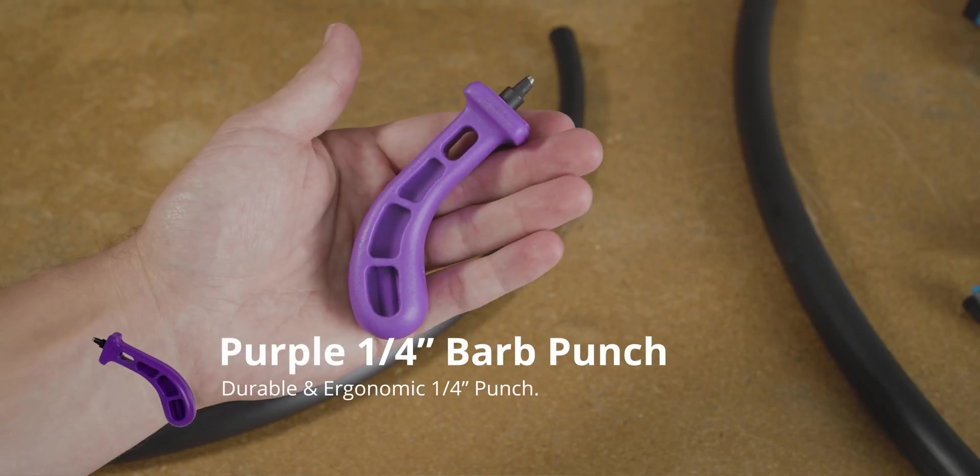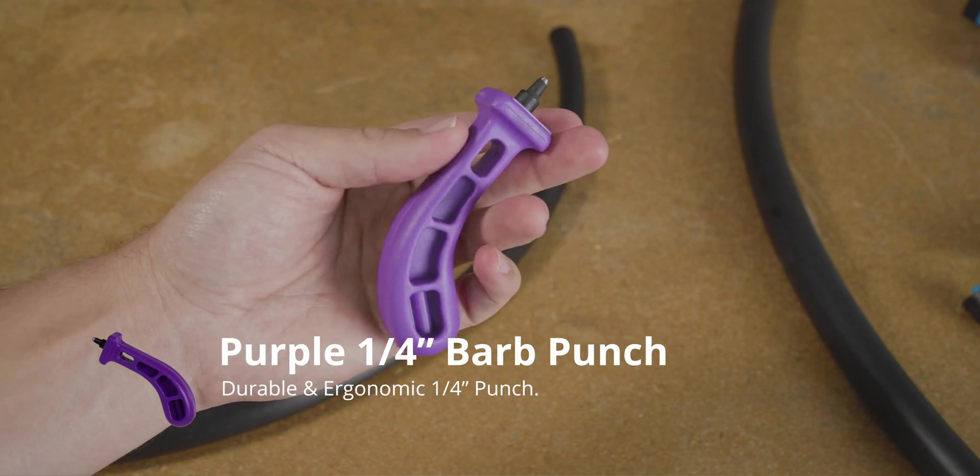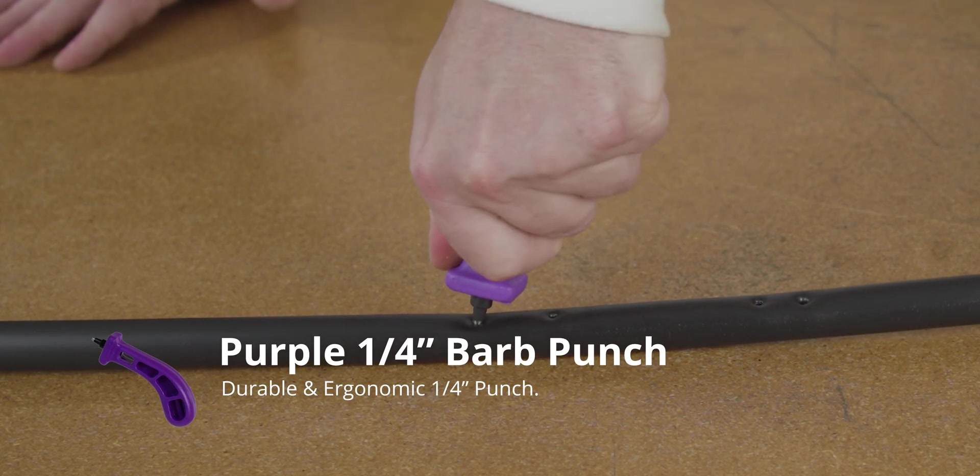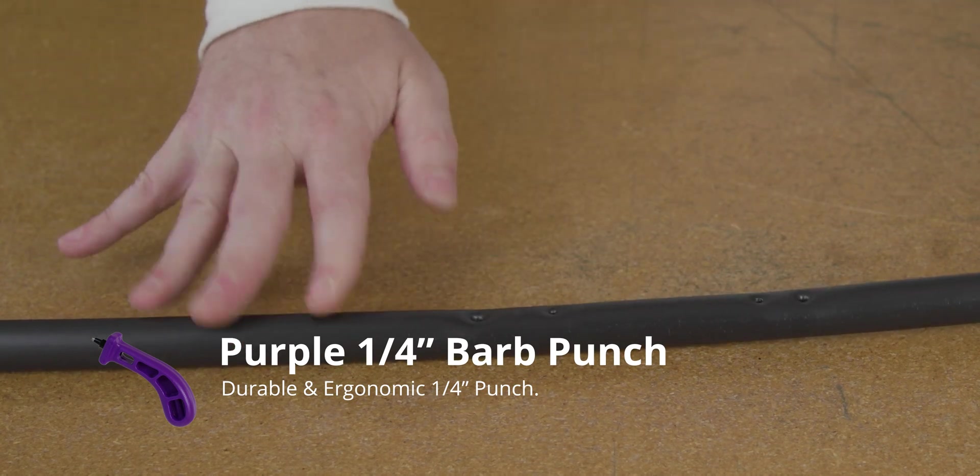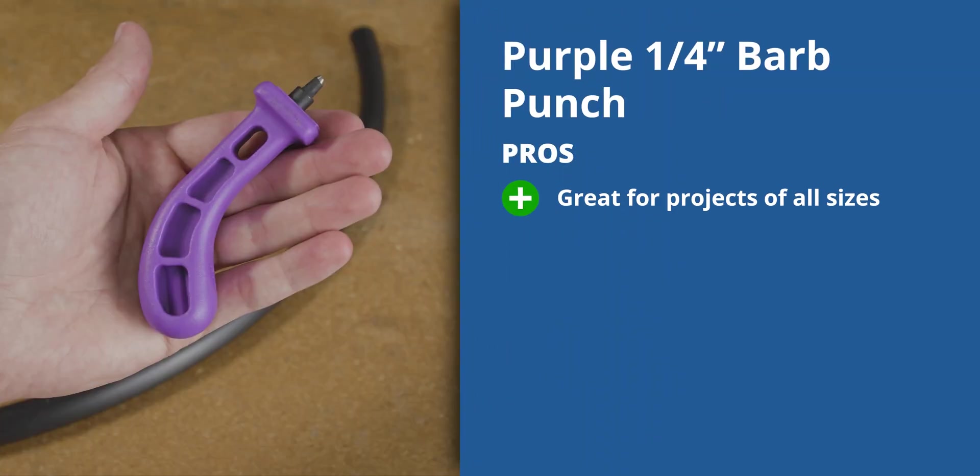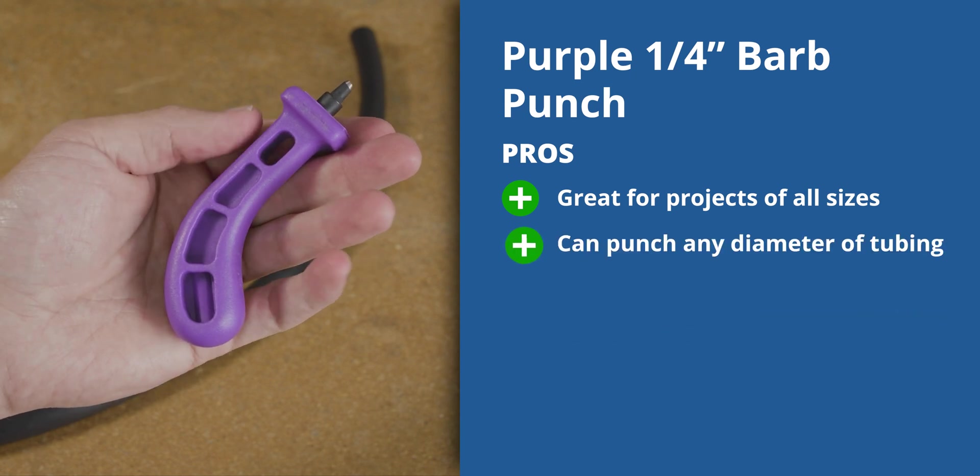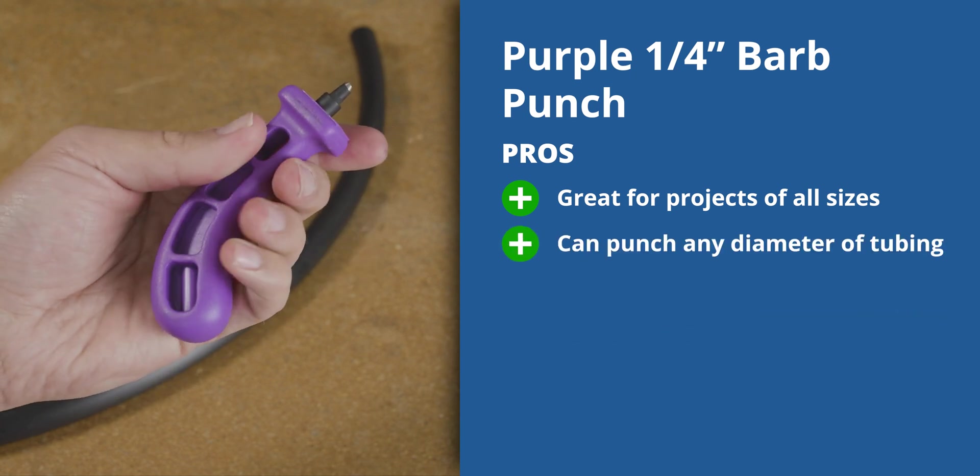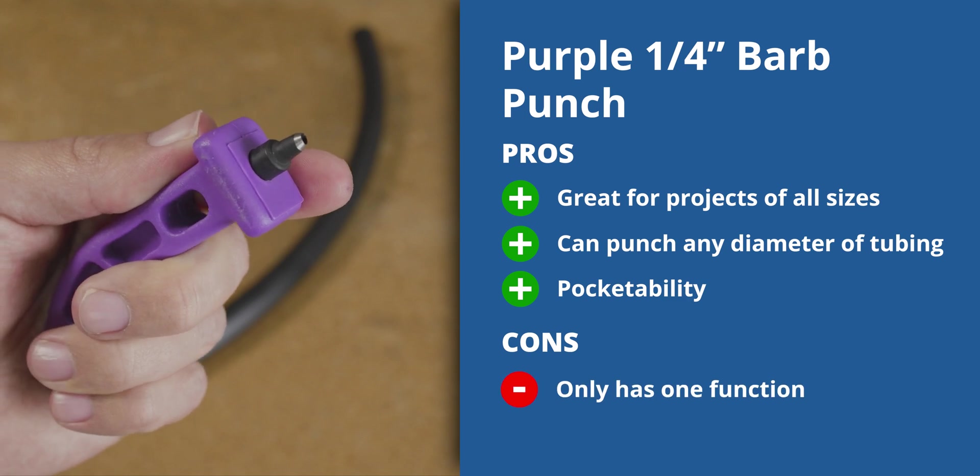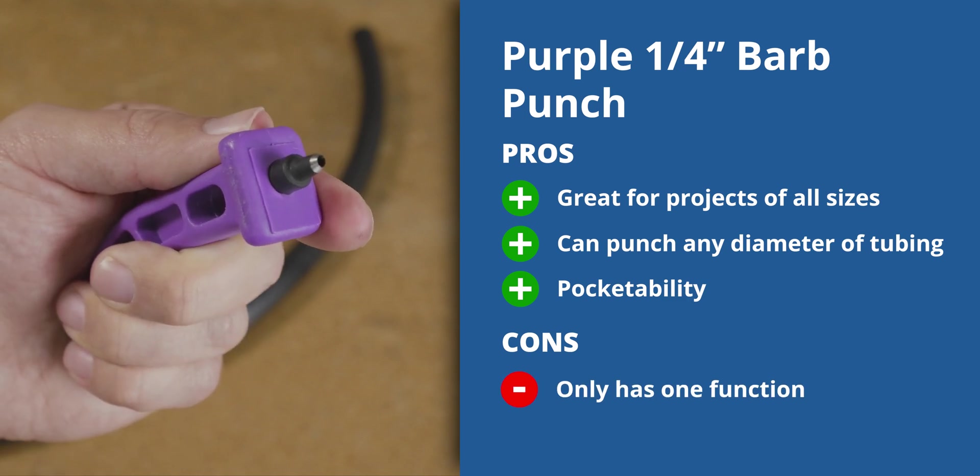This is our Sinninger one-quarter inch punch. They're ergonomic and durably constructed, and they make a really good mid-range punch. Some will also enjoy the pocketability of this punch over the Pro Punch. It can also be easier to punch at awkward angles or tight spaces, and it can punch all the way up to one inch poly tubing. But it is only a single function punch, so any other tools you might need will have to be purchased separately.